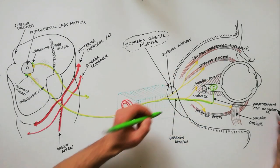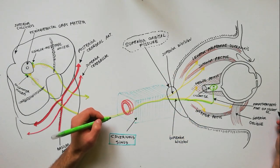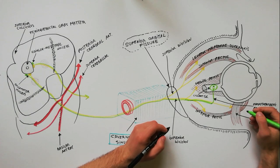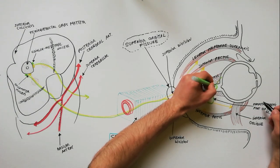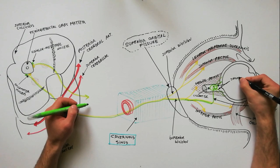The parasympathetic postganglionic fibers from these neurons reach the posterior pole of the eye via the short ciliary nerves.